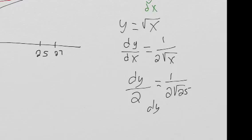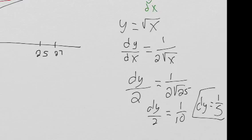Well, then simplifying dy over 2 equals 1 over 10. So dy equals 2 over 10, which is 1 fifth. So dy is 1 fifth.